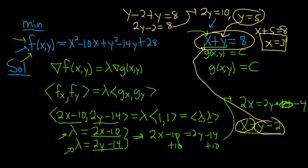Now that we have our x and y, we're pretty much done. All we do now is plug them back into our original function. f(3,5) = 3² - 10×3 + 5² - 14×5 + 28. I'm going to type this into my calculator: 9 - 30 + 25 - 70 + 28. I got -38, which is the correct answer. So that is the minimum.